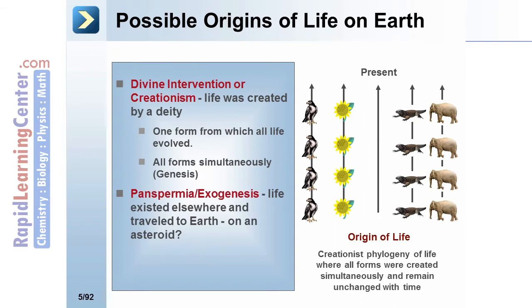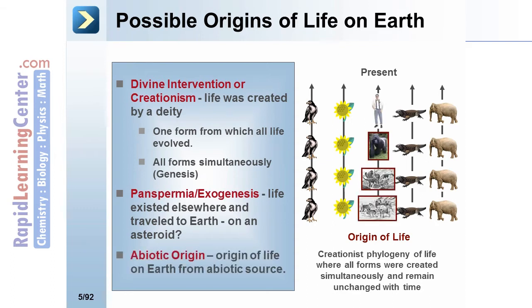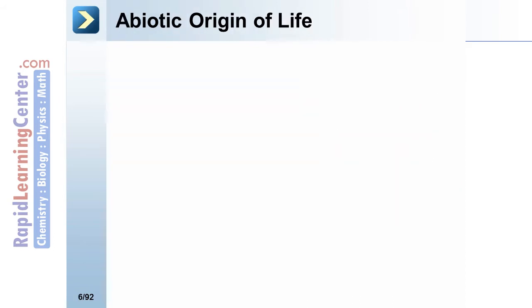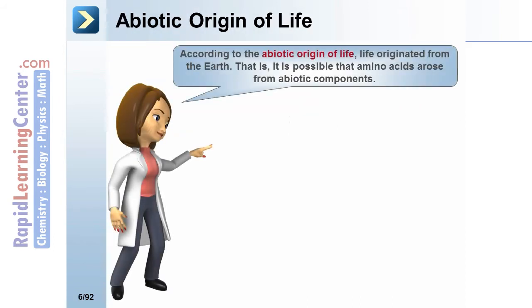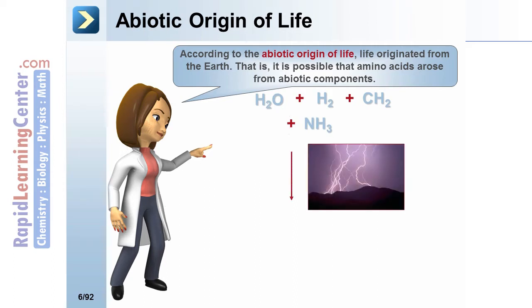Panspermia is an exogenous theory in which life existed elsewhere and traveled to Earth on an asteroid. The abiotic origin theory proposes that life originated on Earth from an abiotic source. According to this hypothesis, amino acids arose from abiotic components in the absence of oxygen, which would also require electrical discharge such as might be present in lightning.